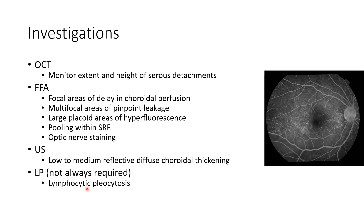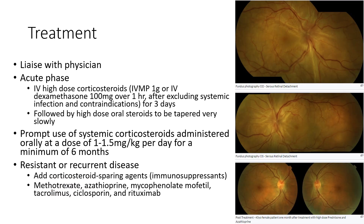Now let us discuss the treatment of VKH disease. We have to coordinate with a general physician. In the acute phase we have to give IV high-dose corticosteroids in the form of IV methylprednisolone 1 gram or IV dexamethasone 100 mg over 1 hour, after excluding systemic infection and contraindications, for 3 days. This is followed by high-dose oral steroids to be tapered very slowly, administered orally at a dose of 1 to 1.5 mg per kg per day for a minimum of 6 months.